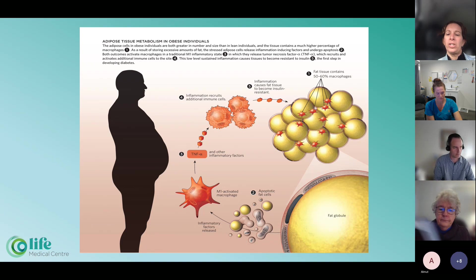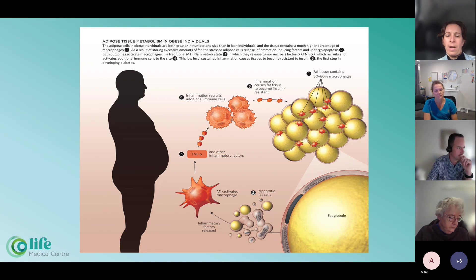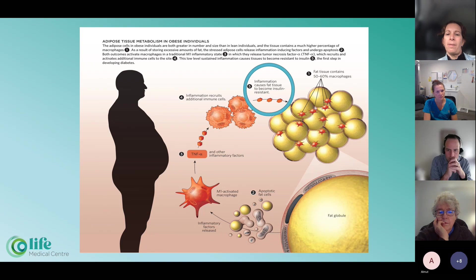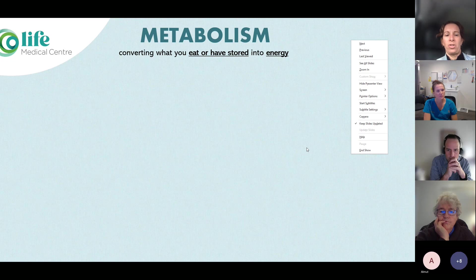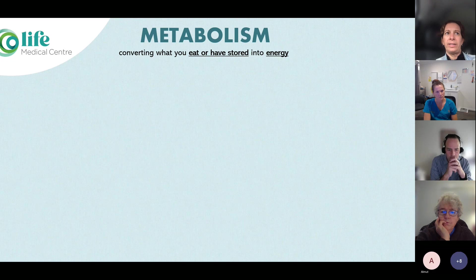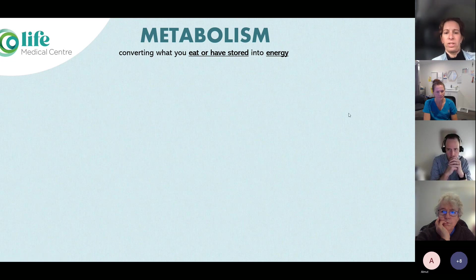As those fat globules multiply, enlarge and undergo apoptosis over time, you have M1 activated macrophages. It leads to a cascade of tumor necrosis factors and a whole range of other things. The inflammation then causes the fat tissue to become insulin resistant — and not only the fat tissue; that then spills over into the rest of our tissues, including our liver. If we have hepatosteatosis or fatty liver, it's a major indicator of underlying metabolic inflammation. The muscles and all the other tissues become insulin resistant as well.